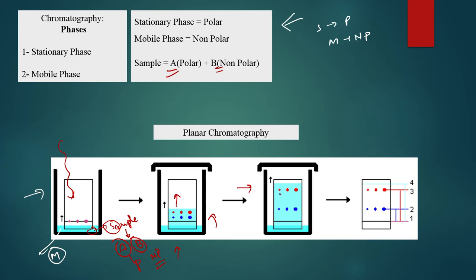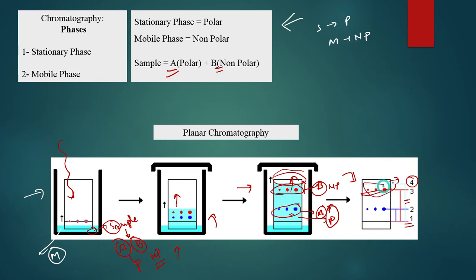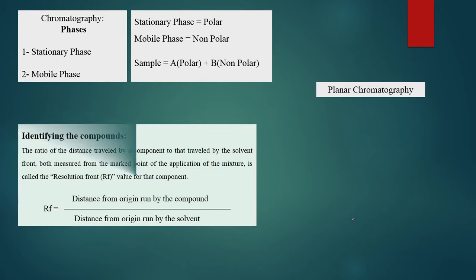In capillary action, the components on this plate flow upward. After some time, the red spot (B) travels higher on the plate, and the blue spot (A) stays lower. B is non-polar and mobile is non-polar — both attract, so B travels up faster. A is polar and stationary plate is polar — both attract, so A stays lower. The initial state shows both components at the origin, and after separation they are at different heights.